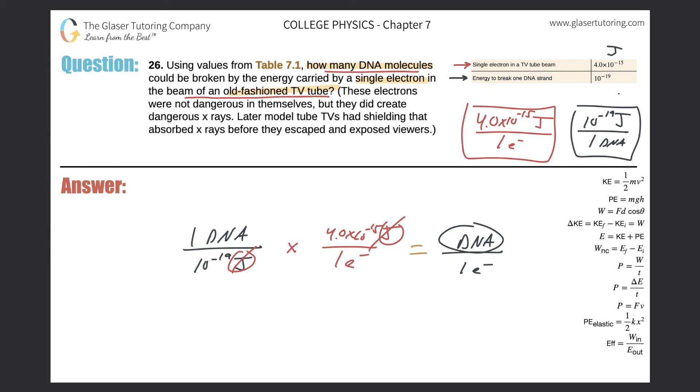So 40,000, I'll do it in scientific notation. So 4.0 times 10 raised to the fourth, times 10 raised to the fourth. And that is in number of DNA molecules per single electron from the TV tube.